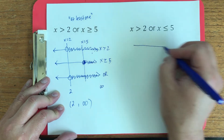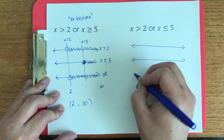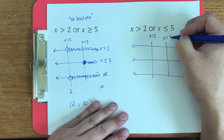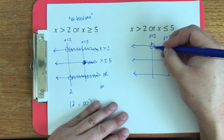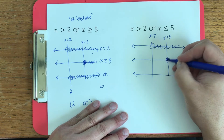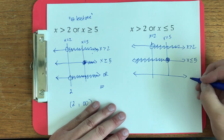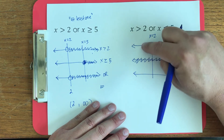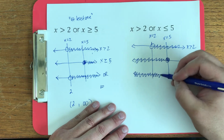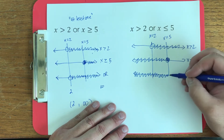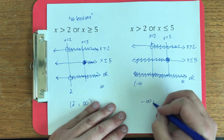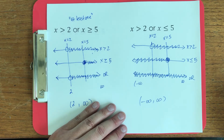For the next OR question, the two inequalities point toward each other. We graph x greater than two and x less than or equal to five. Applying OR — is at least one interval shaded? First interval: yes. Middle interval: yes, both are shaded. Last interval: yes. So the answer is negative infinity to infinity — any number you pick would be a solution.